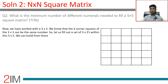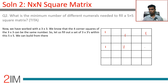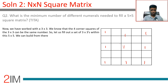What is the minimum number of different numerals needed to fill a 5×5 square matrix? We already know the 3×3 solution. For a 5×5 we can imagine it as a set of 3×3 blocks. If the top-left 3×3 uses numeral 1 in its corners, we can place 1s in corresponding non-adjacent positions across the 5×5.